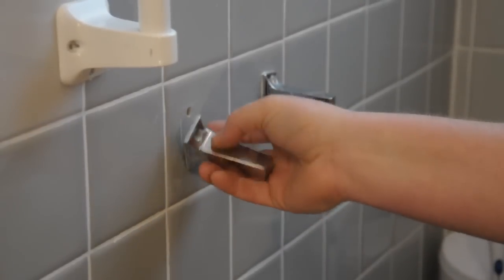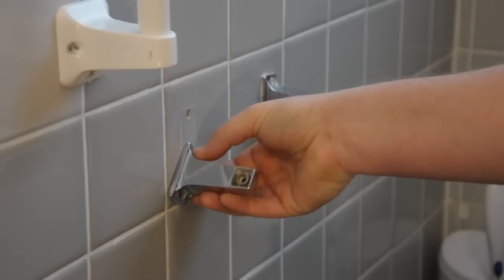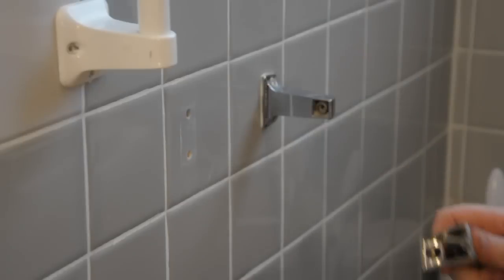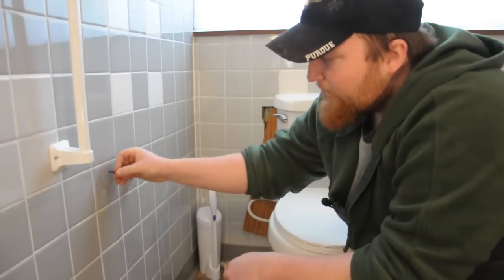First thing you want to do is remove the broken toilet paper holder. Take your wall anchor and place them into the hole.